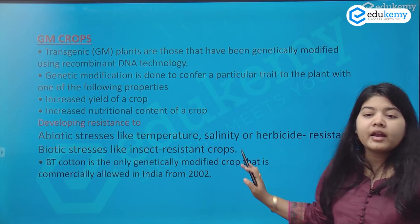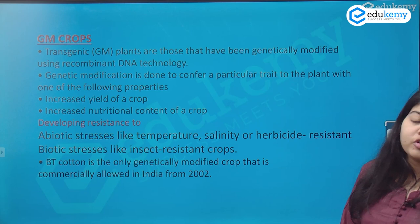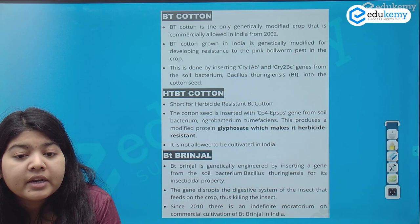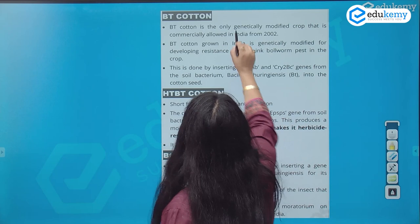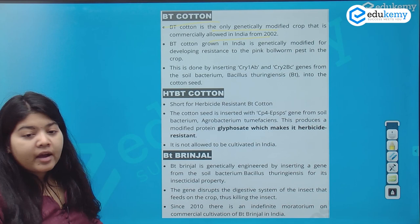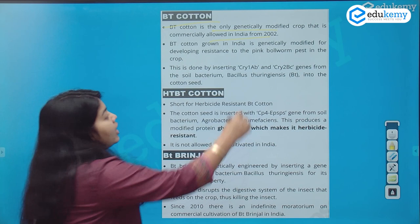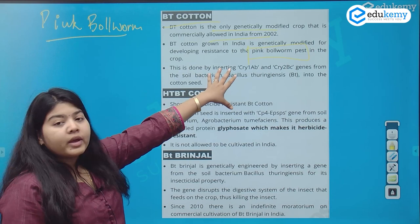The biggest controversy is around BT brinjal, which is being illegally cultivated in India. BT cotton is the only genetically modified crop commercially allowed in India. The BT cotton grown in India is genetically modified for developing resistance to a pest called the pink bollworm, by inserting two genes — cry1Ab and cry2Bc — from soil bacteria.